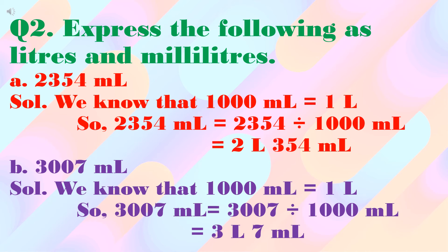We know that one thousand milliliters is equal to one liter, so three thousand seven milliliters will be equal to three thousand seven divided by one thousand. When converting a smaller unit to a bigger unit, we do division. Three thousand seven divided by one thousand gives us three as the quotient and seven as the remainder, so the answer is three liters and seven milliliters.